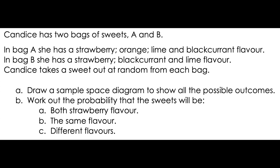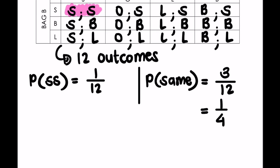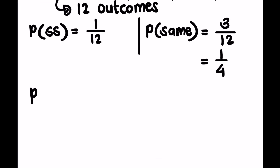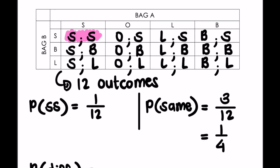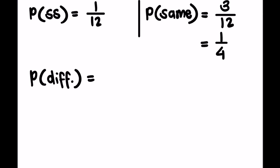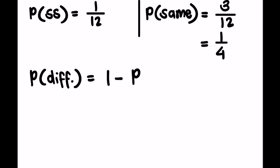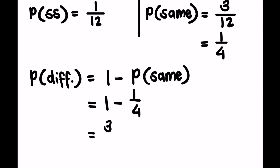The last question: what is the probability that they'll be different flavors? We could count how many are different — excluding the strawberry-strawberry, lime-lime, and blackcurrant-blackcurrant, that leaves 9 out of 12. Alternatively, the probability of being different equals 1 minus the probability of being the same, which is 1 minus 1/4 or 1 minus 3/12, giving a 3 out of 4 chance.